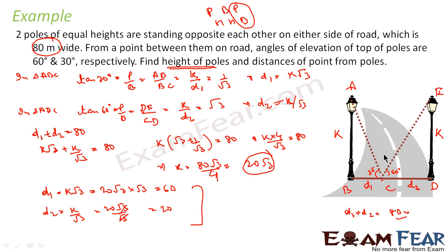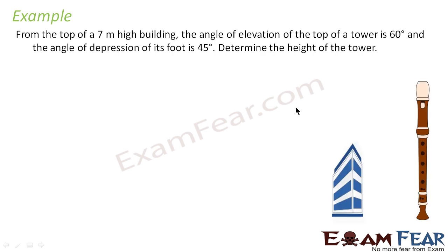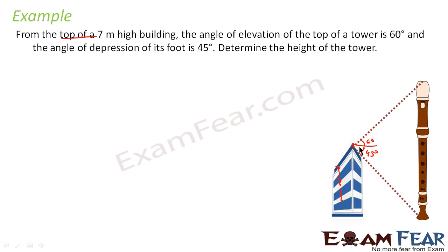To summarize: we had the road with two equal poles, set up two triangles, assumed height k, and solved for k and the distances. Next problem: from the top of a 7-meter high building, the angle of elevation of the top of a tower is 60° and the angle of depression of its foot is 45°. Find the height of the tower.